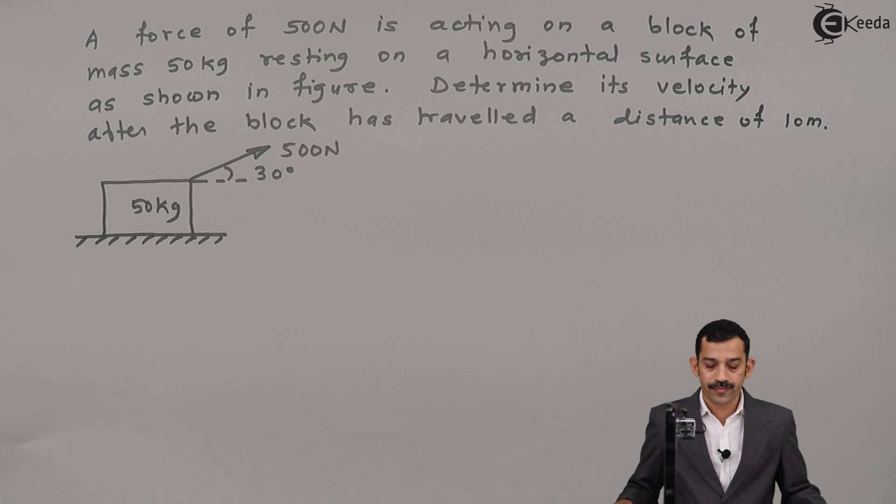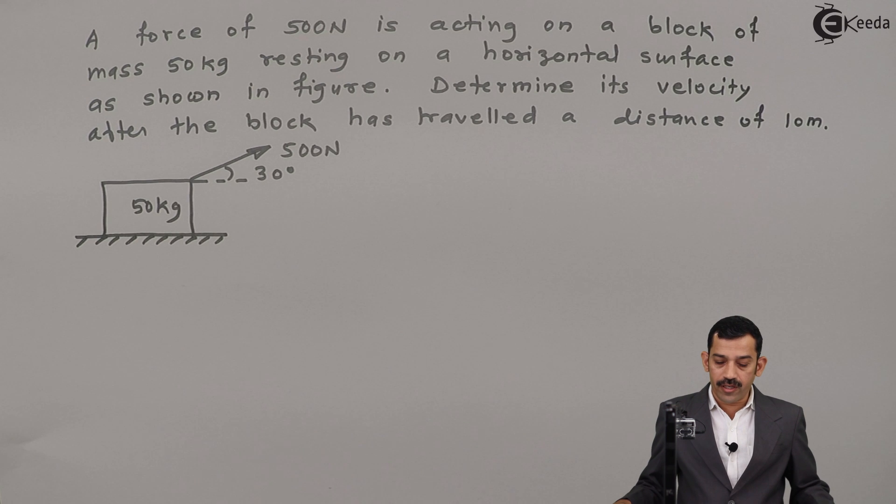Hi friends, we will solve a problem on work energy principle. What is given in this problem? A force of 500 Newton is acting on a block of mass 50 kg resting on a horizontal surface as shown in figure.